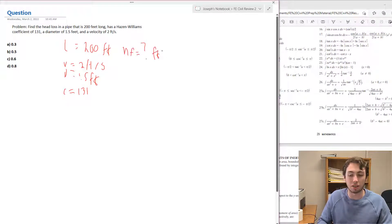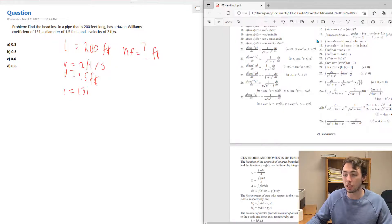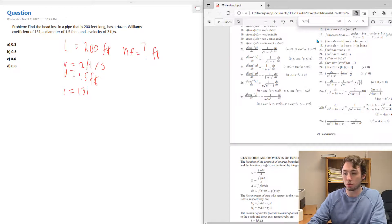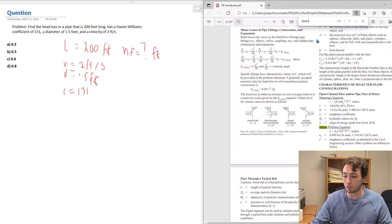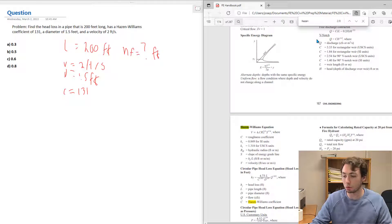We don't know what that value is yet but we're going to use the Hazen-Williams equation to find it. So let's flip over to the FE manual and we're going to search for Hazen-Williams equation and see what comes up. We specifically want to find the head loss equation, so we find it over here.